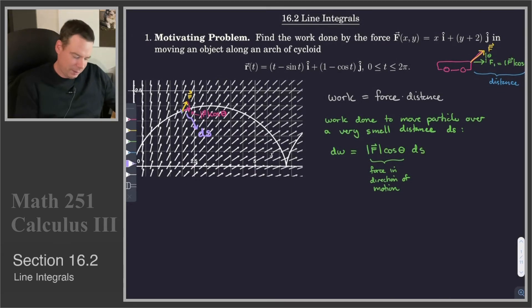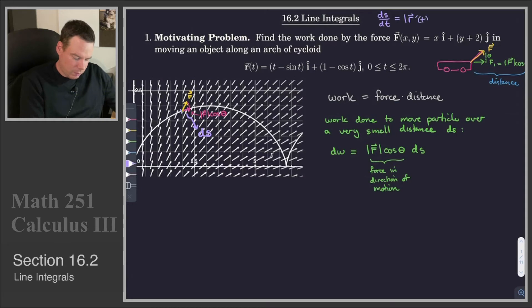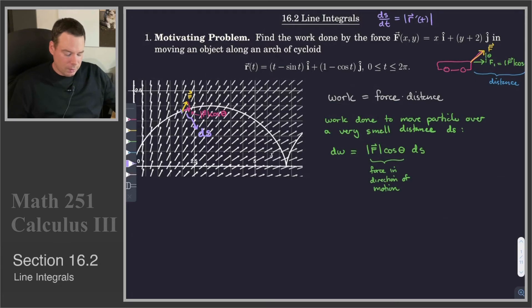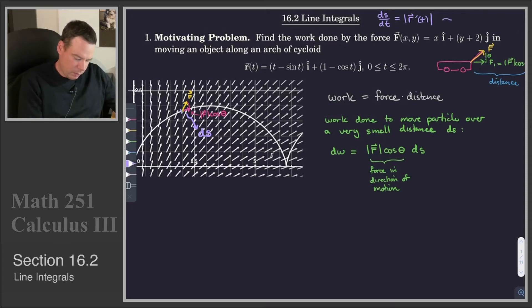For parametrized curves, ds/dt — the derivative of the arc length function — is the magnitude of r'. We refer to this as two representations of speed: ds/dt is one representation, and the magnitude of r' is another. These two things are equal, so if I represent the differential ds in terms of dt, I get that ds equals the magnitude of r' dt, and that is what we want to use here.